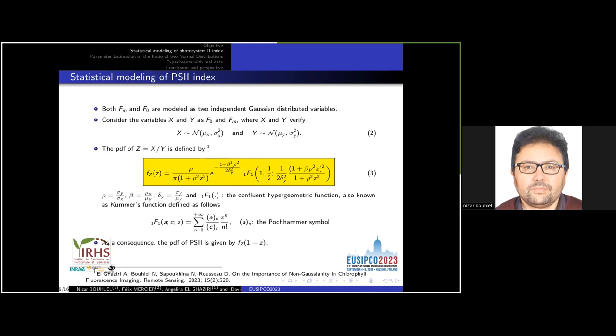It was shown that both FM and F0 are modeled as two independent Gaussian distributed variables. Consequently, the PCI index distribution can be modeled in the following way. Let us consider the variables X and Y as F0 and FM respectively, where X and Y are two independent normally distributed variables given by equation 2. The PDF of variable Z equals X over Y is defined by equation 3, where rho equals sigma Y over sigma X, beta equals mu X over mu Y, delta Y equals sigma Y over mu Y, and finally one F one is the confluent hypergeometric function, also known as the Kummer function. As a consequence, the PDF for PCI index is given by Fz(1 minus Z).